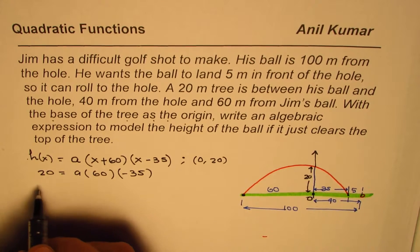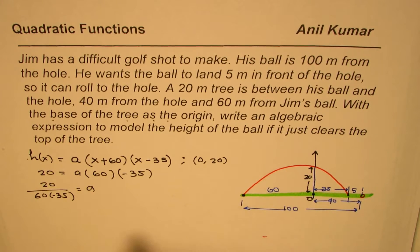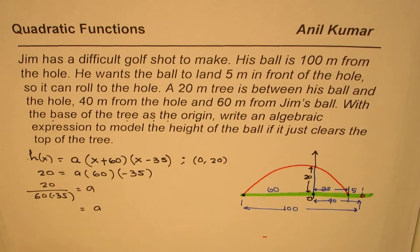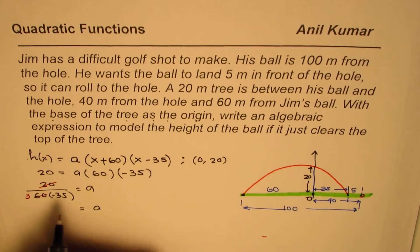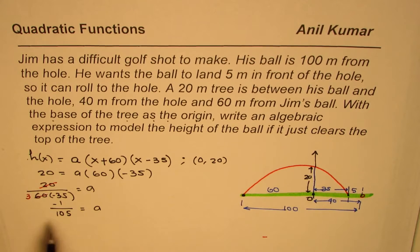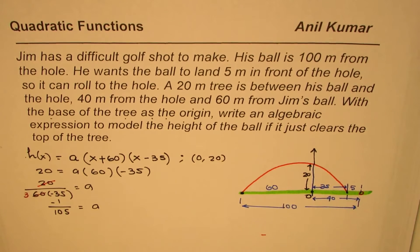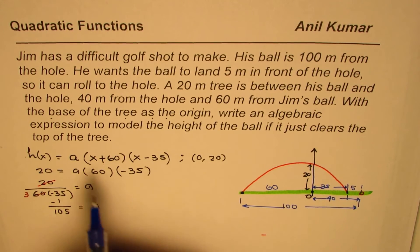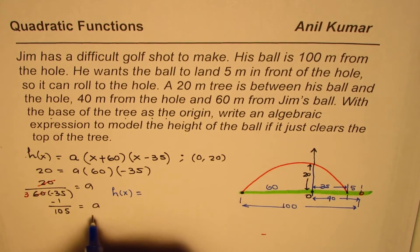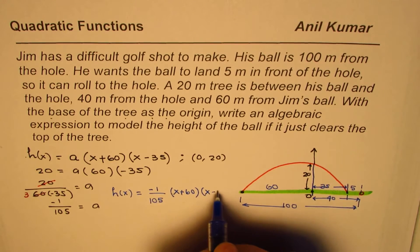That gives us the value of a: a = 20 divided by (60 × -35). Calculating: 20 divided by 60 simplifies, 60 over 20 is 3, so we get a = -1/105. This makes sense since the parabola opens downward. So the equation in factored form is: h(x) = -1/105 × (x + 60)(x - 35).